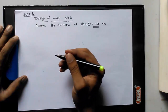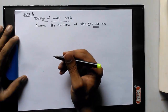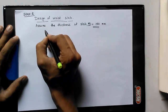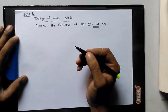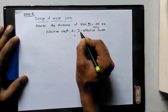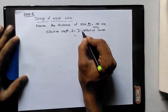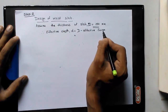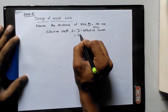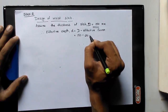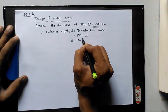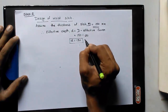The effective depth is D minus the effective cover. We assume the overall depth D = 150 mm and the effective cover as 20 mm. Therefore, effective depth d = 150 − 20 = 130 mm.